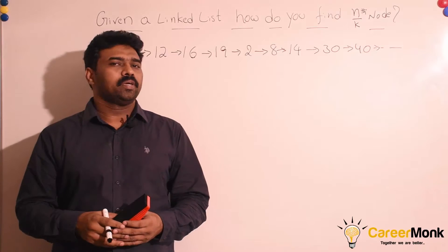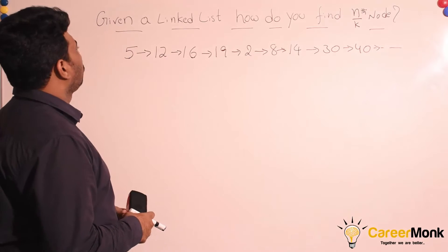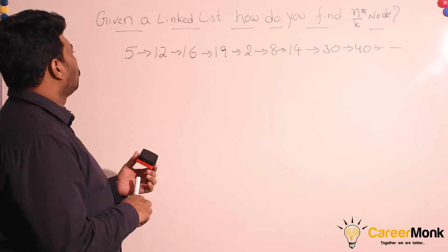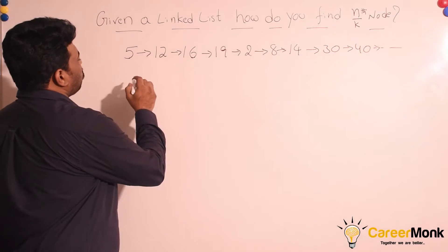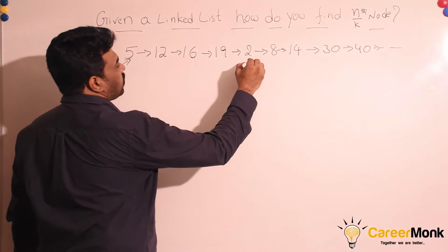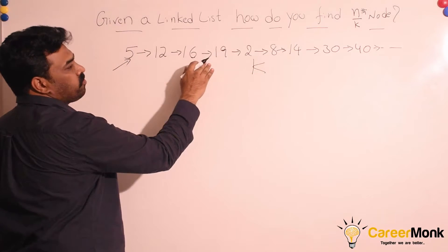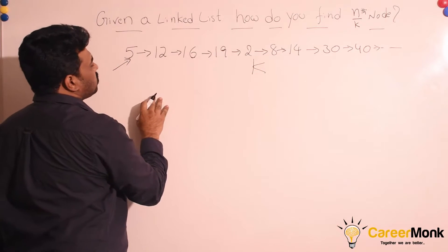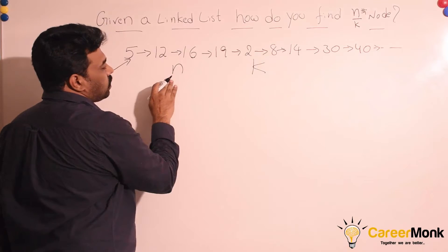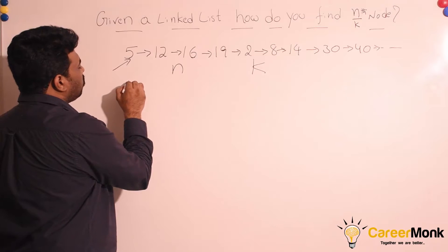In this session we are going to discuss a linked list problem. Given a linked list, how do you find the n/kth node? The input for this problem is a pointer to a linked list and a constant k. Since we don't know the number of elements in the linked list, let us assume the length of the linked list is n. How do you solve this problem?